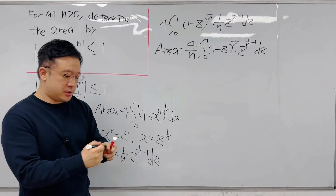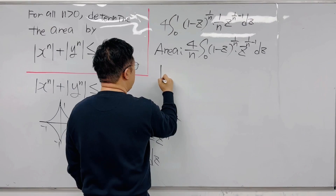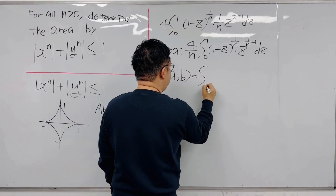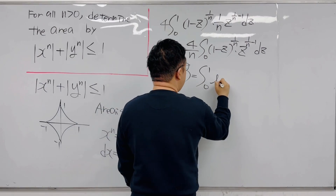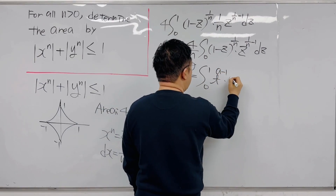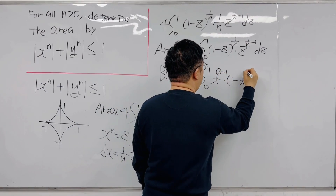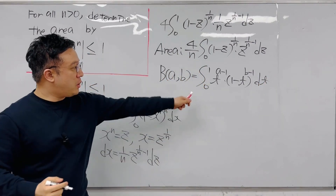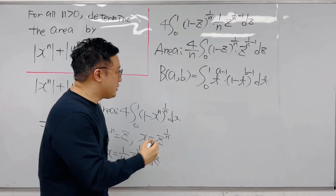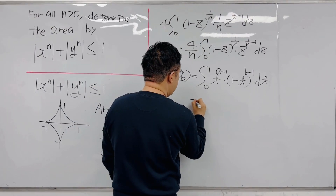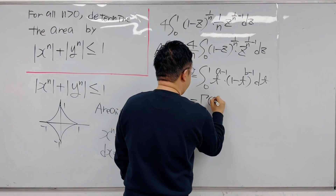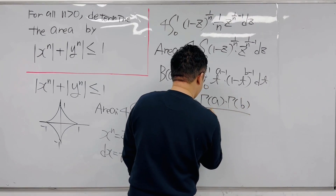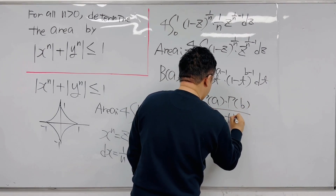Now we can introduce the beta function. The beta function B(a, b) is defined as the integral from 0 to 1 of t^(a-1) × (1 - t)^(b-1) dt. This can be represented using gamma functions: B(a, b) = Γ(a)·Γ(b) / Γ(a + b).